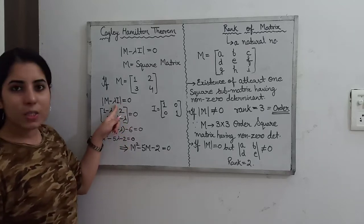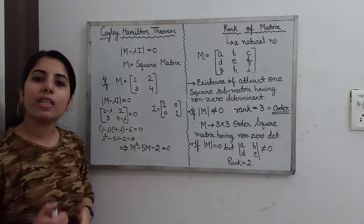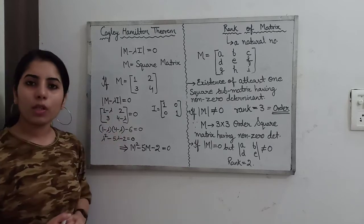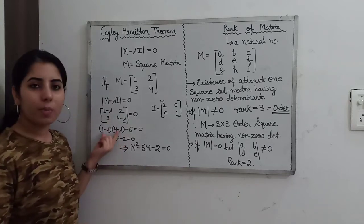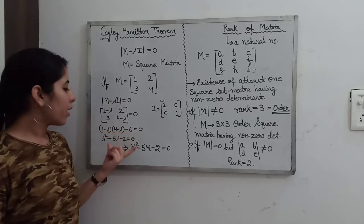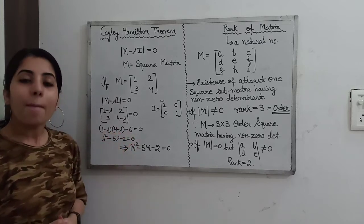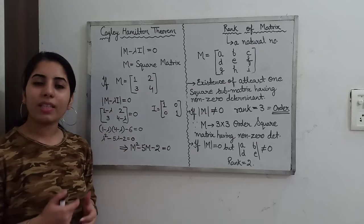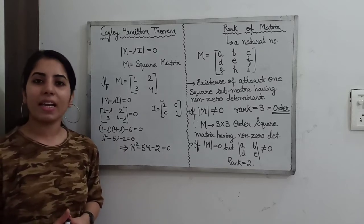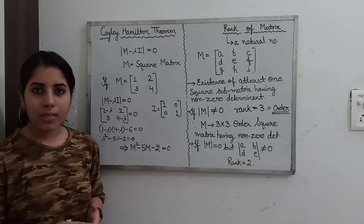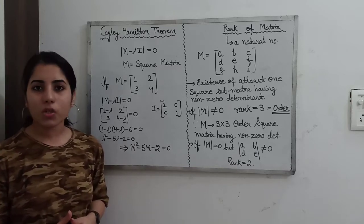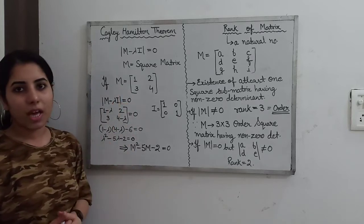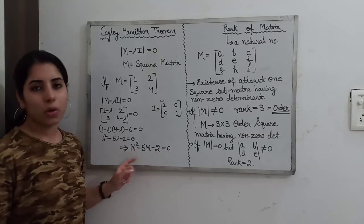When you simplify this expression and find the determinant, after multiplying and simplifying the terms, you will get an equation in terms of lambda — that is your characteristic equation. According to the Cayley-Hamilton theorem, we can put matrix M in place of lambda in this equation, because every square matrix satisfies its own characteristic equation. So we substitute the same matrix M in place of lambda into the characteristic equation we obtained, and that is the equation we get.